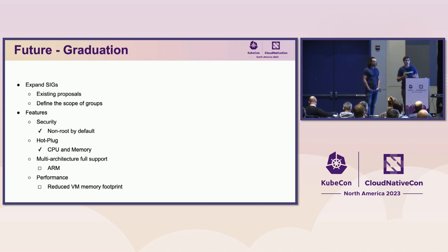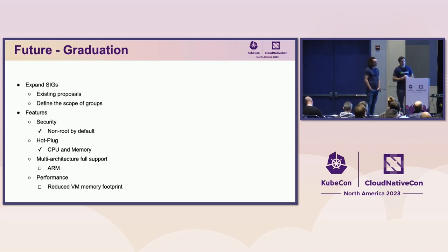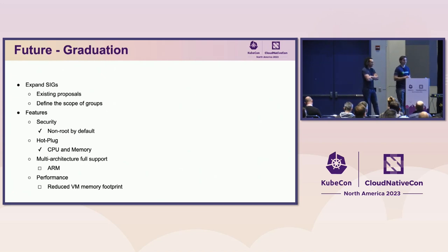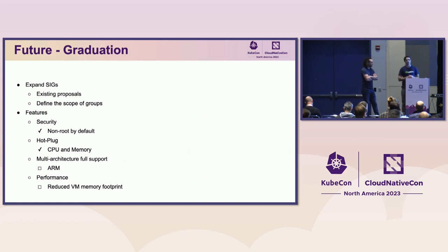In terms of features we consider really important for taking the next step toward graduation — security is a huge one. We want the project to be secure. One of the big features delivered recently was non-root by default. Now in all the testing lanes in KubeVirt, we're running as non-root. That's really exciting and something really important for reaching graduation.